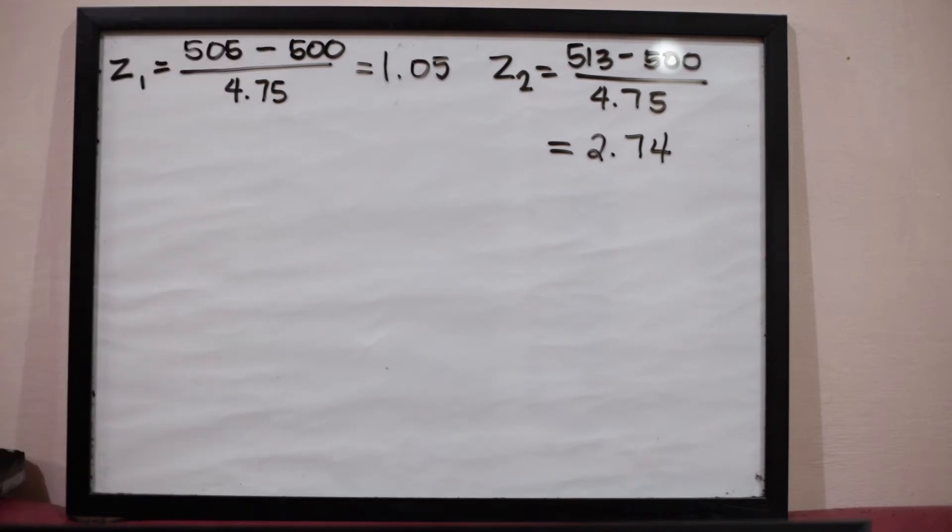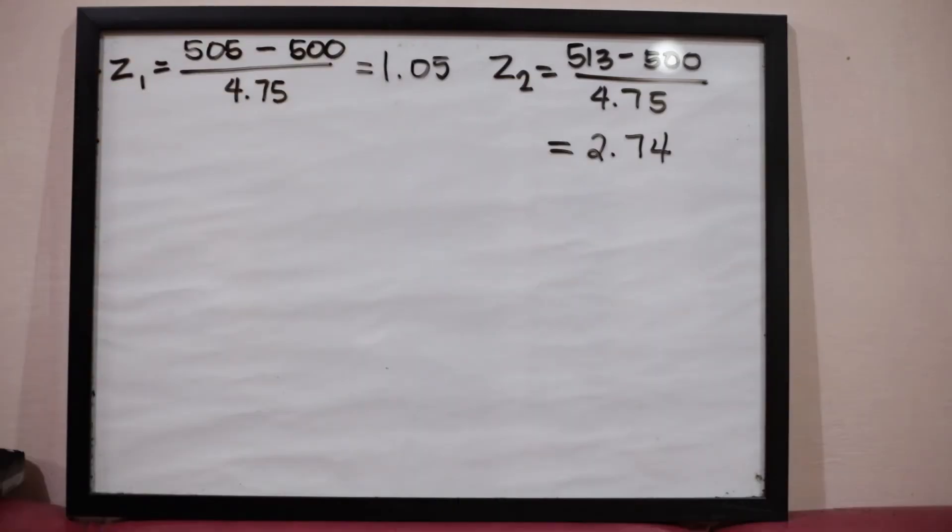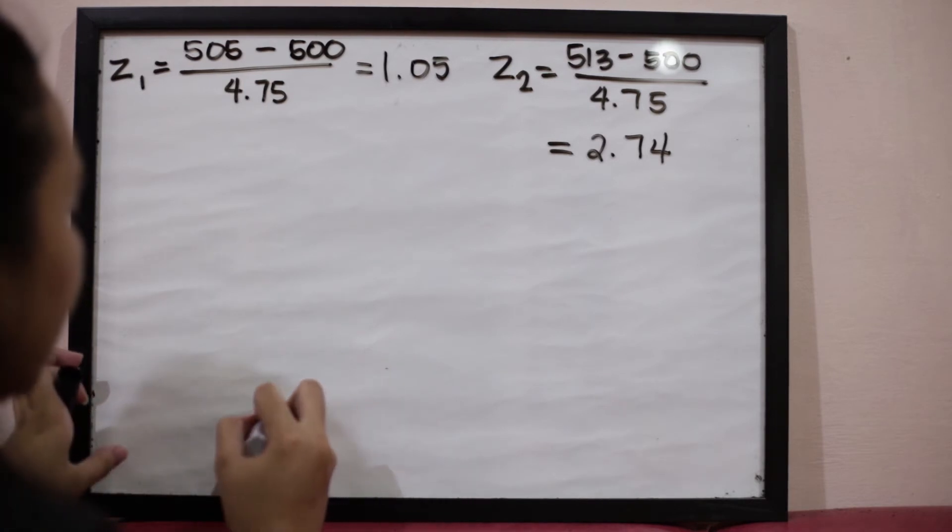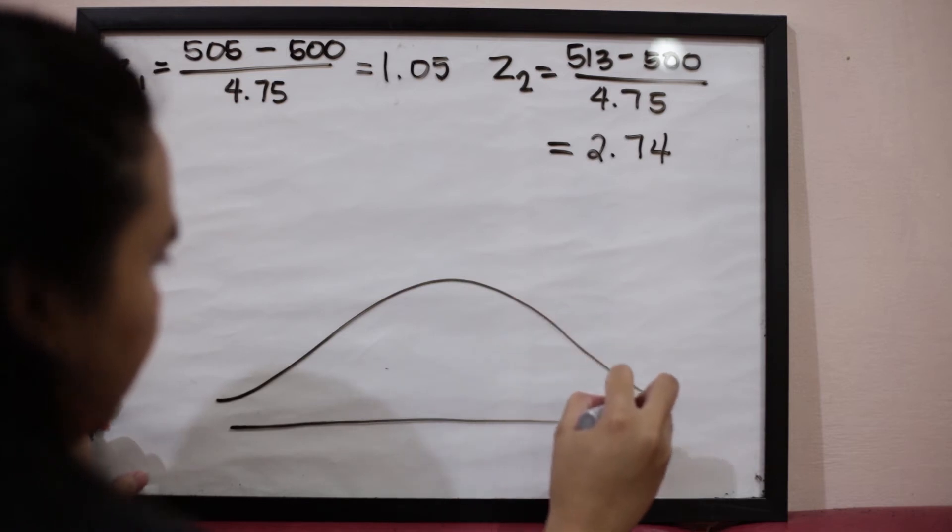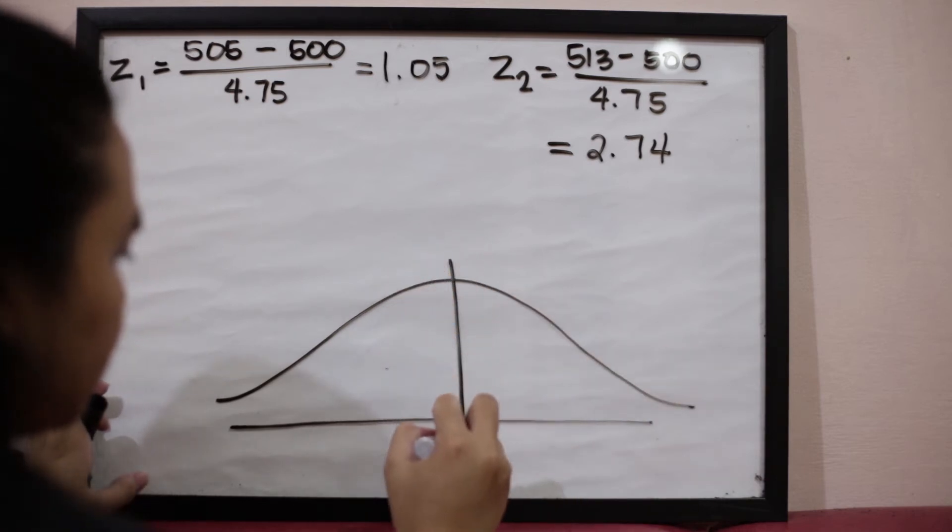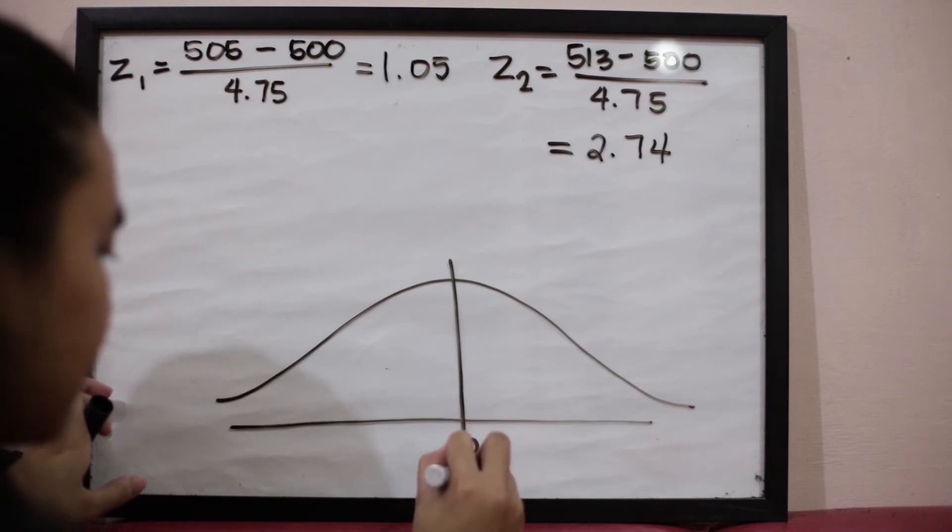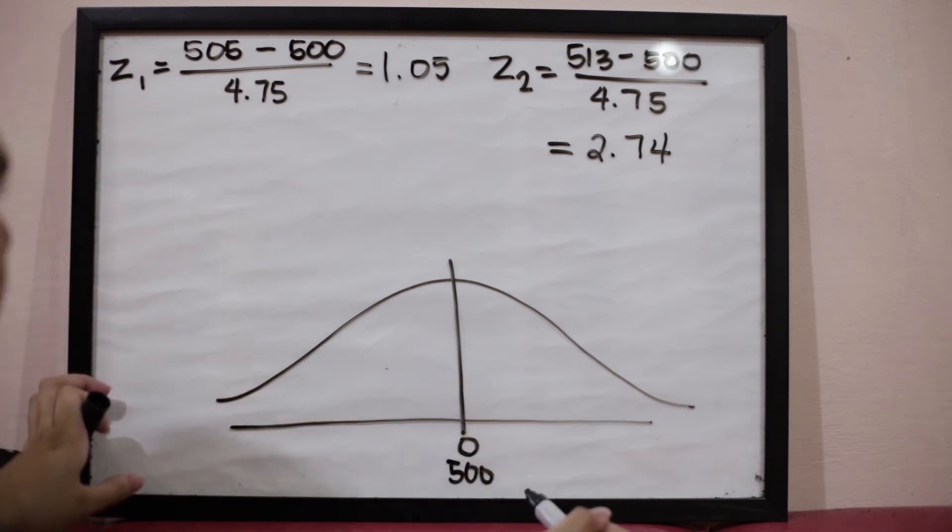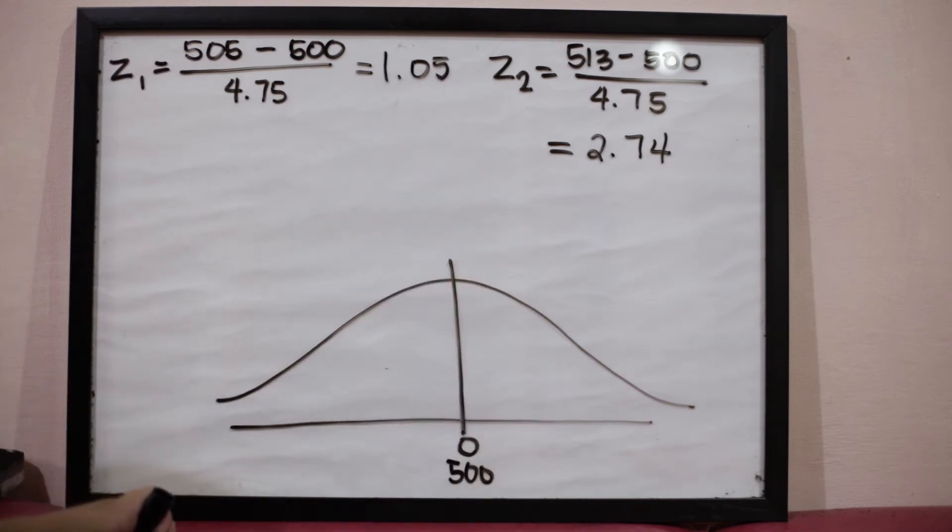What we're going to do is, after getting the z-scores equivalent to those raw scores, we have to draw the normal curve and then plot the mean. Since the mean is equal to 500, this is 500. Then we plot the z-scores. The first z-score is 1.05.